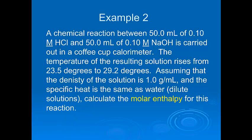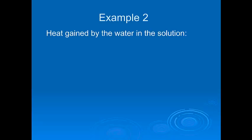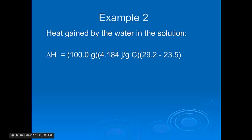For dilute solutions, the density and specific heat capacity don't change very much — this is a mostly water situation — so the specific heat capacity of this solution is going to be the same as that of water: 4.184. What we're going to calculate is something called the molar enthalpy for this reaction — not just how much heat this specific reaction produced, but how many joules per mole of reactants are produced. Using our equation delta H equals M times C times delta T: we have 50 milliliters plus 50 milliliters, which is 100 milliliters of solution, and at a density of 1 gram per milliliter that's 100 grams. The final temperature was 29.2 and initial was 23.5, giving us delta H of 2,385 joules gained by the water.